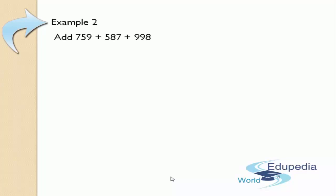Hi guys, welcome to Edipedia World. This is Varun Ganga. In today's session, we are going to learn one more example regarding addition of numbers by the Bindavankana method, which is stated in Vedic Mathematics. Now let us see Example number 2: add 759 plus 587 plus 998.